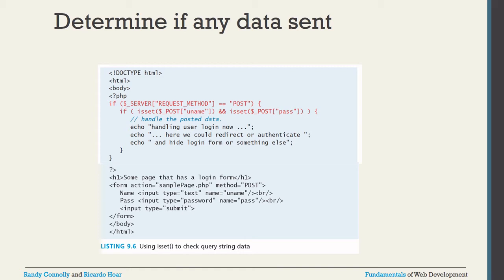isset() can also be described as a way to check query string data — verifying that a key-value pair is available in your array. When dealing with arrays, isset() checks whether a particular key exists; here we use it to check whether the query string data is available.